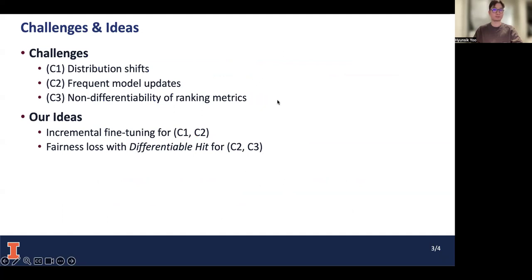In this problem, we identified three challenges: distribution shift, frequent model updates, and non-differentiability of ranking metrics. Our ideas to mitigate these challenges are incremental fine-tuning for C1 and C2, and fairness loss with differentiable hit for C2 and C3.